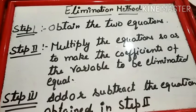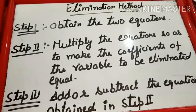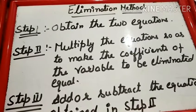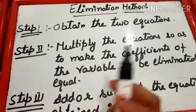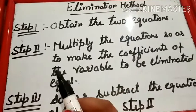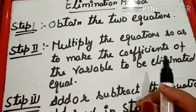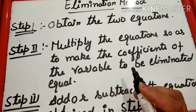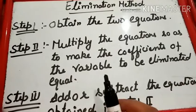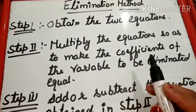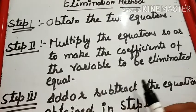आज जो हम Algebraic Method से उठाने जा रहे हैं वो है Elimination Method। उसके Steps क्या हैं? To find X and Y: Step 1 is Obtain the 2 Equations. सबसे पहले जिन Equations को हमने Solve करना है, सबसे पहले हम वो लेंगे। Then, Multiply the Equation so as to make the Coefficient of the Variable to be Eliminated Equal.